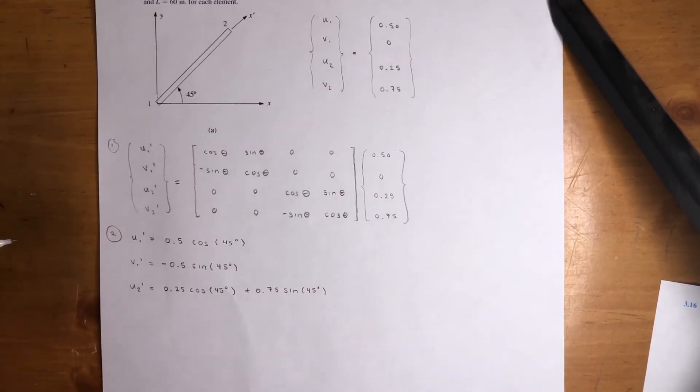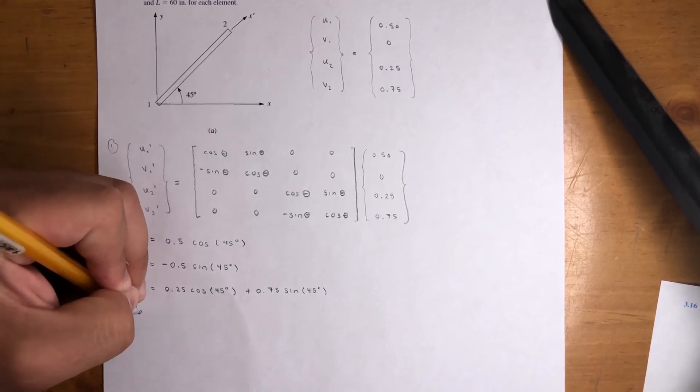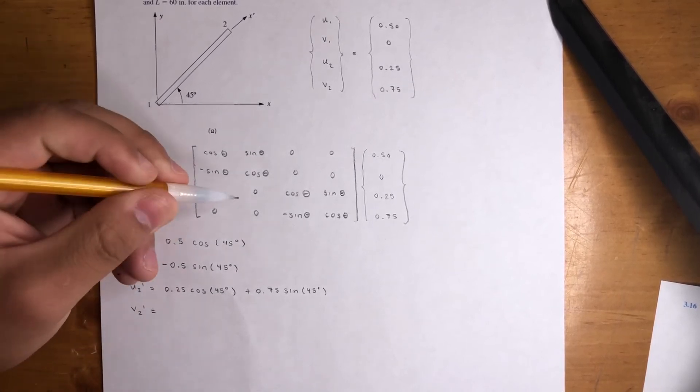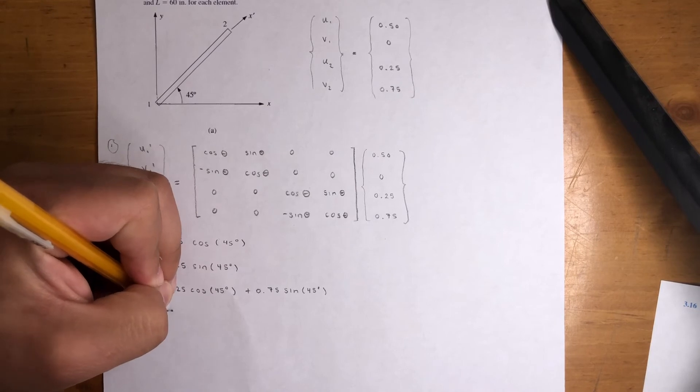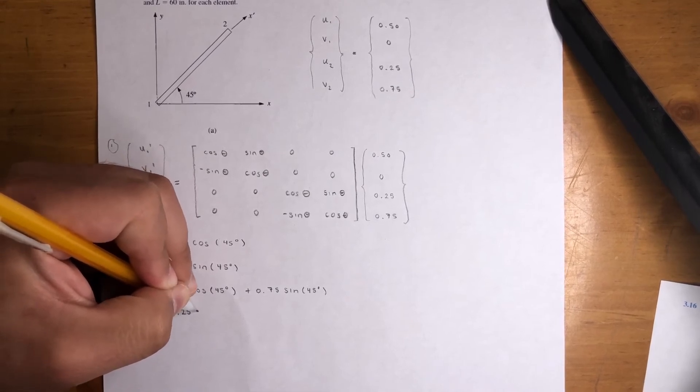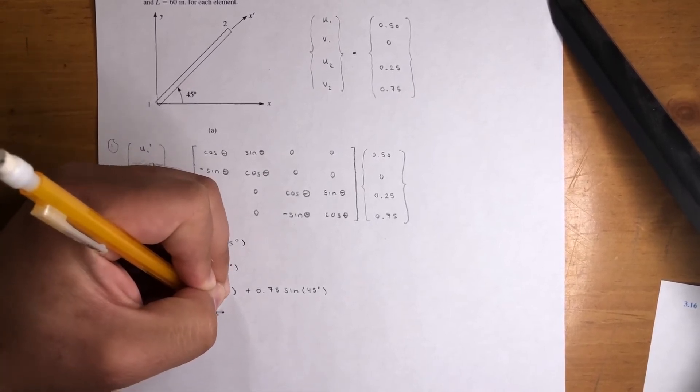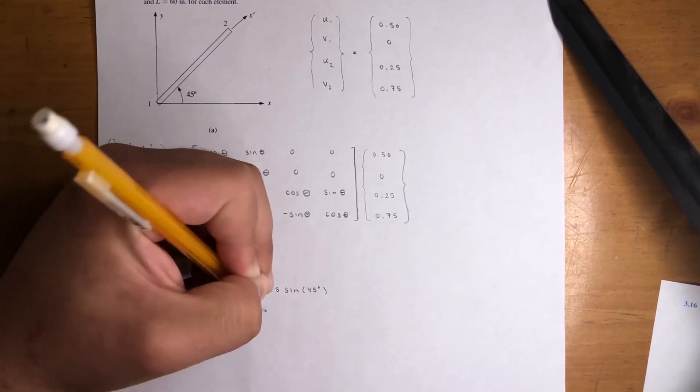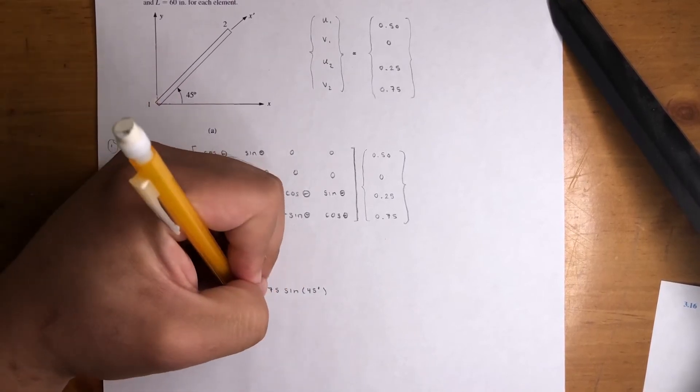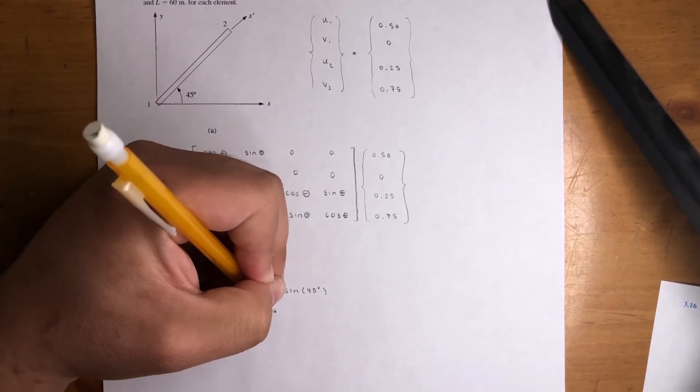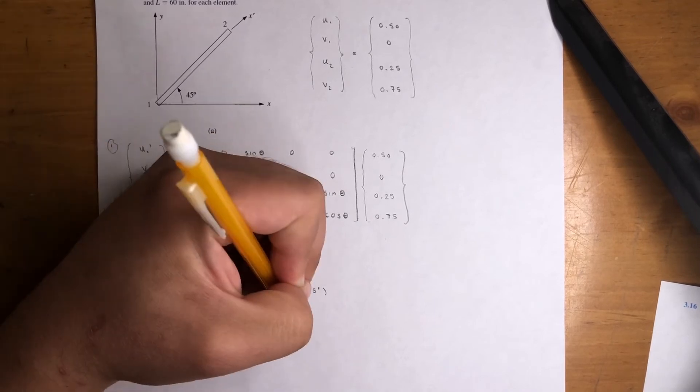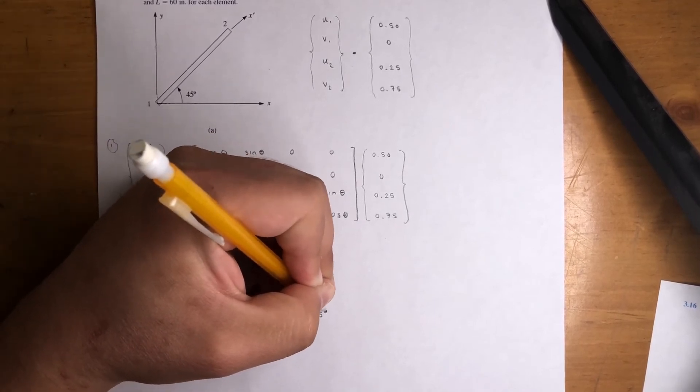We'll go to V2. And it's pretty much the same thing. Now it's negative 0.25 sine 45 degrees. Plus, yes, plus 0.75 cosine 45 degrees.